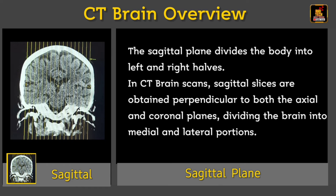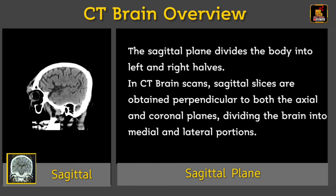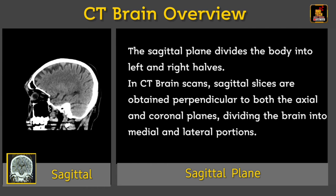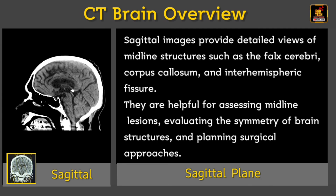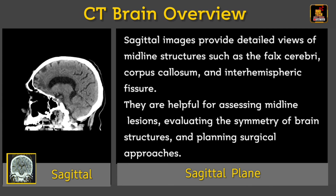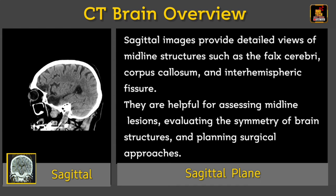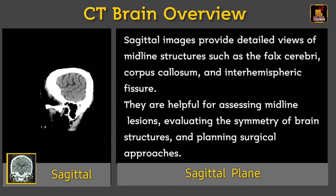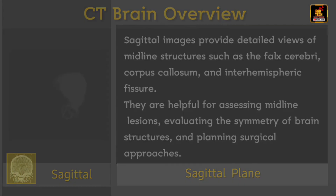The sagittal plane divides the body into left and right halves. In CT brain scans, sagittal slices are obtained perpendicular to both the axial and coronal planes, dividing the brain into medial and lateral portions. Sagittal images provide detailed views of midline structures such as the falx cerebri, corpus callosum, and interhemispheric fissure. They are helpful for assessing midline lesions, evaluating the symmetry of brain structures, and planning surgical approaches.